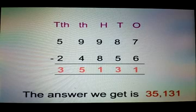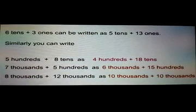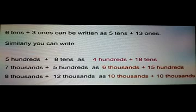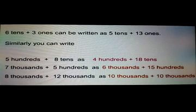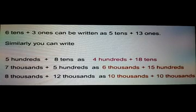Now let us understand the concept of subtraction with regrouping. Before that, let us see this example very carefully. 6 tens plus 3 ones can be written as 5 tens plus 13 ones. Similarly, 500 plus 8 tens can be written as 4 hundred plus 18 tens. 7 thousand plus 5 hundred as 6 thousand plus 15 hundred. 8 thousand plus 12 thousand as 10 thousands plus 10 thousands.